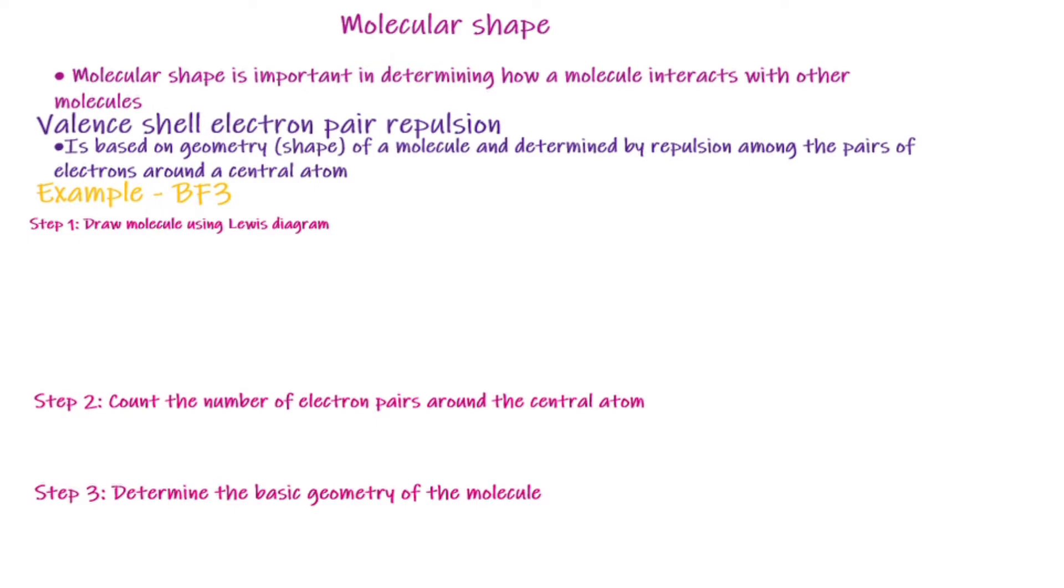We are going to follow some steps here. The first step is to determine the Lewis diagram structure. We are going to count the number of electron pairs around the central atom and determine the basic geometry structure of the molecule. Now let's start.